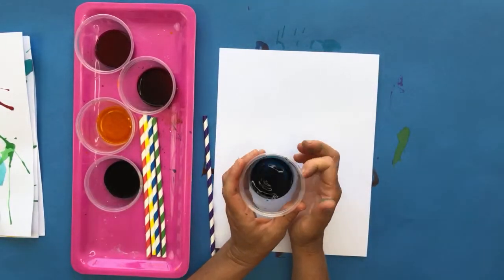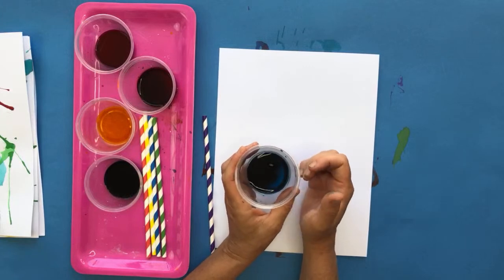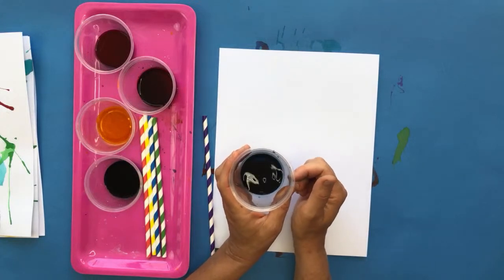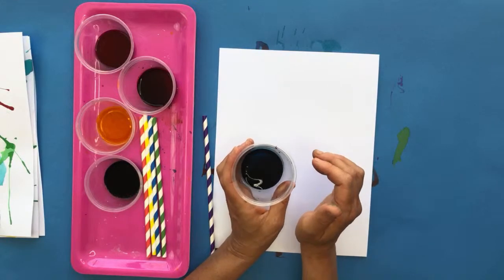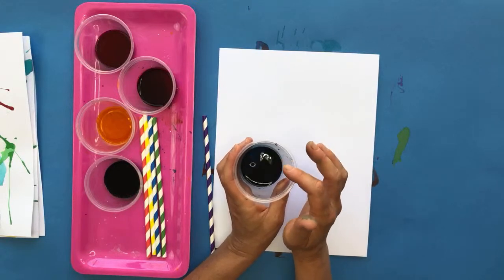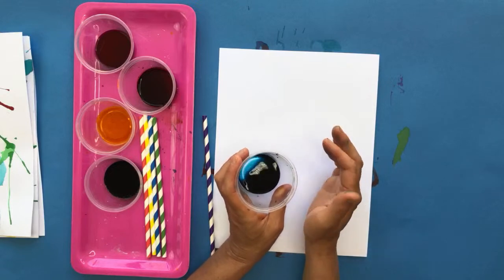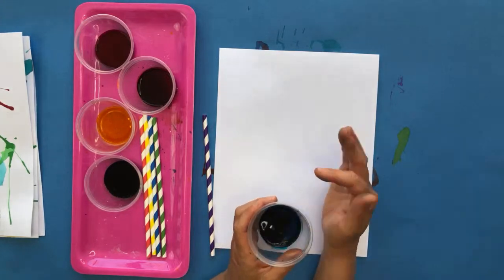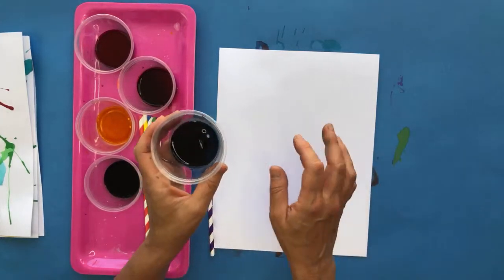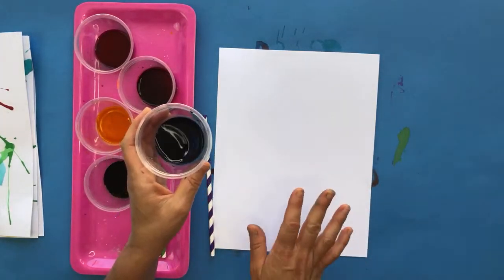All right, so the first thing we're going to do is we're going to mix up our colors. Now I've already mixed mine. I want to recommend that you use a lot of food coloring and very little water. You will need some water, I don't want you to waste all your food coloring on this, but the concentration should be pretty heavy on the pigment.